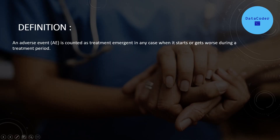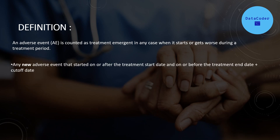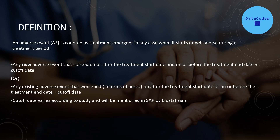An adverse event is counted as treatment emergent in any case when it starts or gets worse during a treatment period. There are two definitions. The first says: any new adverse event that started on or after the treatment started and on or before the treatment ended plus cut-off date. The second says: any existing adverse event that worsened in terms of severity on or after treatment started and on or before treatment ended plus cut-off date. This cut-off date will differ according to your study and will be mentioned in the SAP.